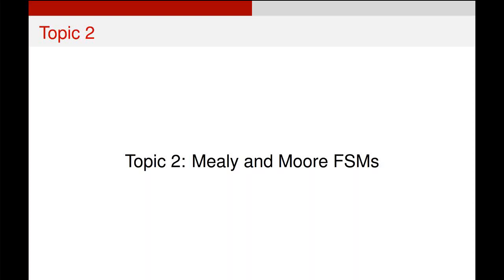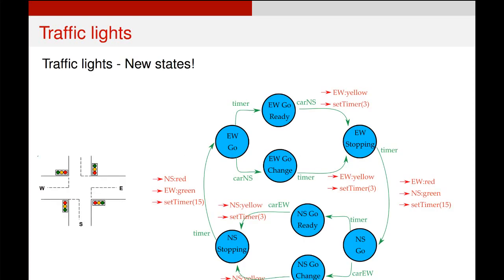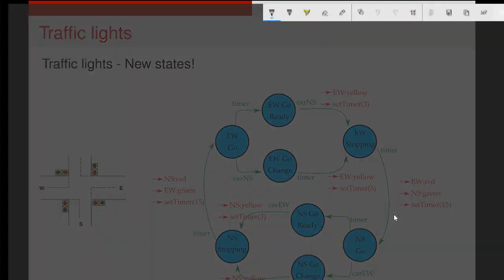So we're talking about finite state machines, and we found that our finite state machines weren't quite cutting the mustard. Very simply, all we need to do is add a couple more states. Let's explain how this diagram differs from the one previously.